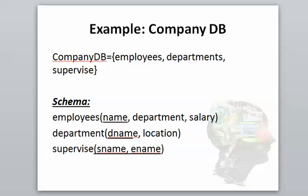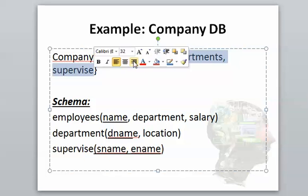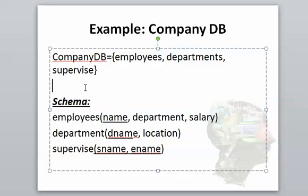For this example we're going to use the following schema — let's call this the company database. The company database contains three relations: employees, departments, and supervise. Most cases, instead of calling them relations, people call those tables. The schema is defined as follows: employees has primary key name, department, and salary.